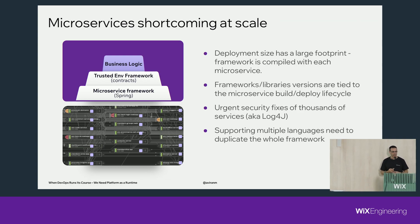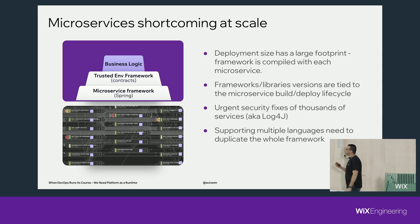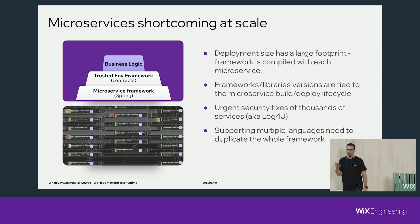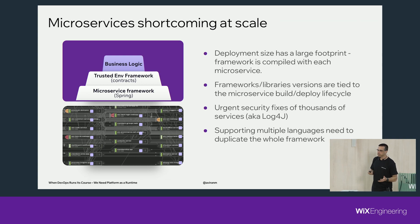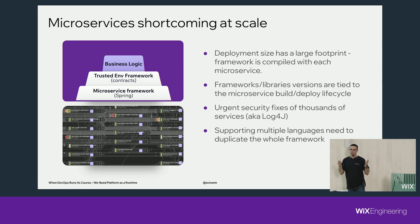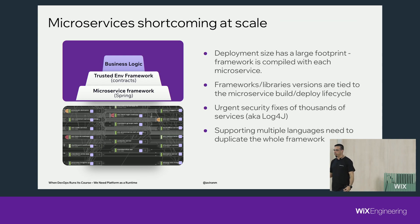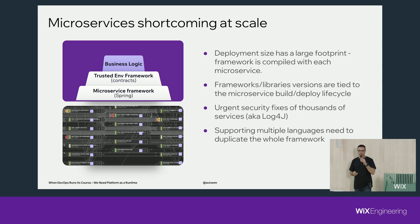Everybody has this kind of problem. Another issue: we invest a lot of effort building frameworks to make developers' lives easier. But if I want to add another language - say we work in Scala and want to add TypeScript - I need to maintain two frameworks. If I add Python, three frameworks. It's a lot of overhead: keeping feature parity, a lot of resources, teams building the same thing over and over in multiple languages.